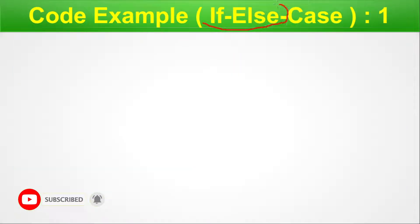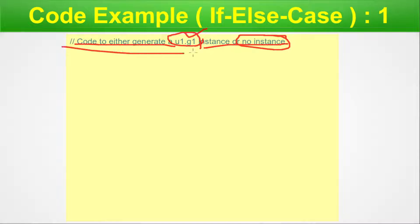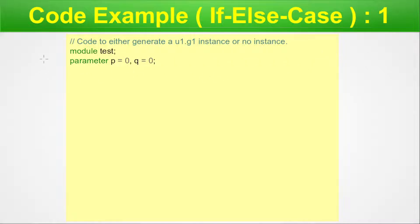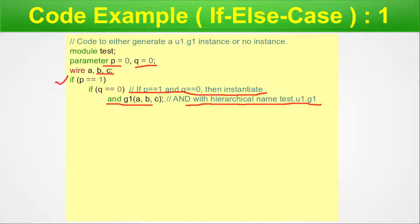Code example one is a combined if-else and case example. The code generates a u1.g1 instance or no instance using the generate block. We define the module 'test' with parameters p and q and their initial values, then define wire abc. The first condition is: if p == 1, then a nested if checks if q == 0, and if so, instantiates an AND gate with hierarchical name test.e1.g1.